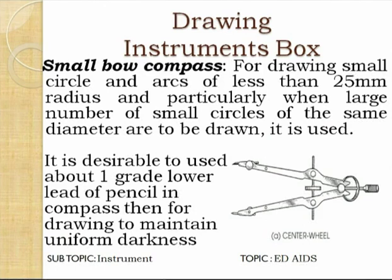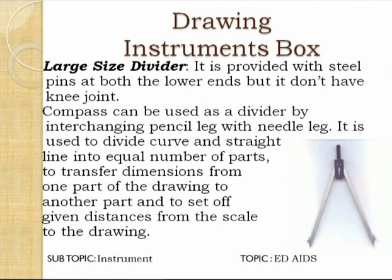The small bow compass is used for drawing small circles and arcs of less than 25 mm radius, particularly when a large number of small circles of the same diameter are to be drawn. It is desirable to use a pencil lead one grade lower than the pencil used for drawing, in order to maintain uniform darkness in the drawing.